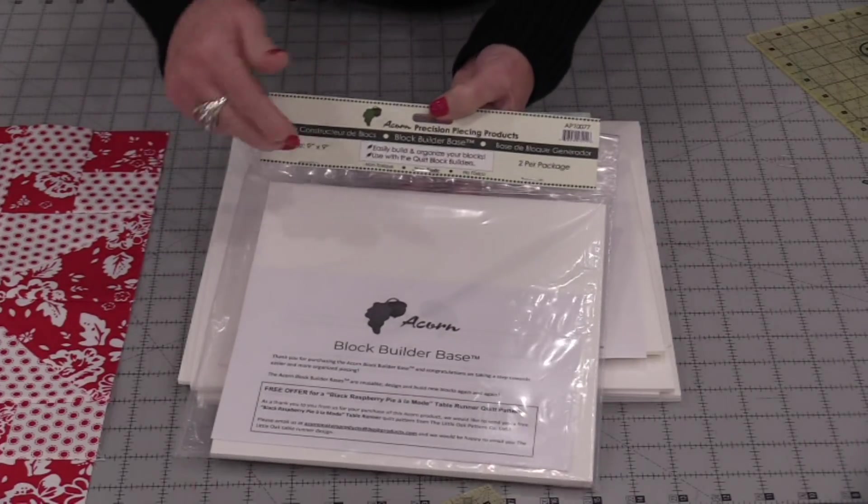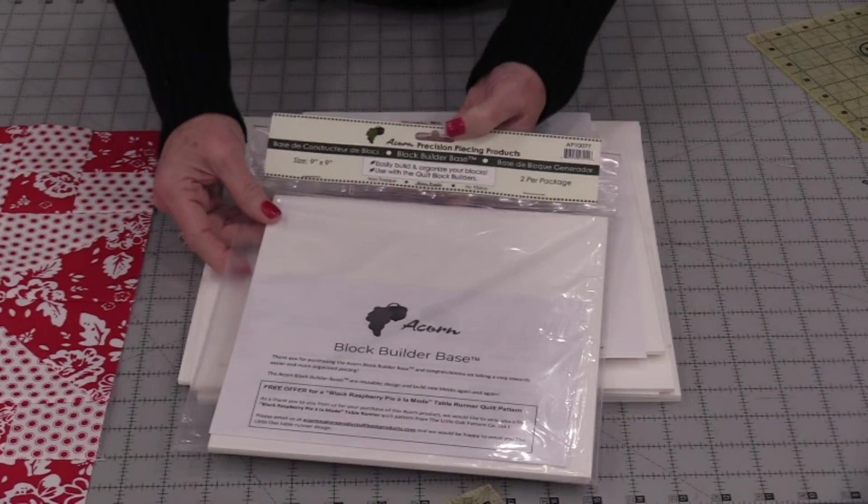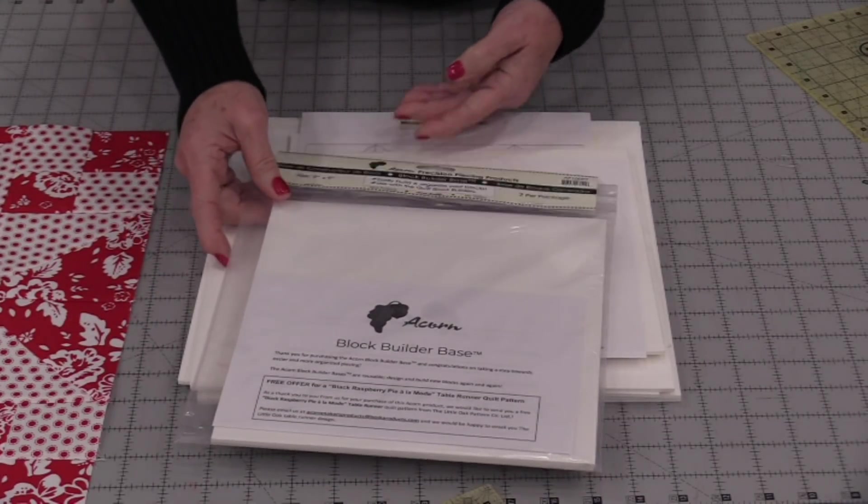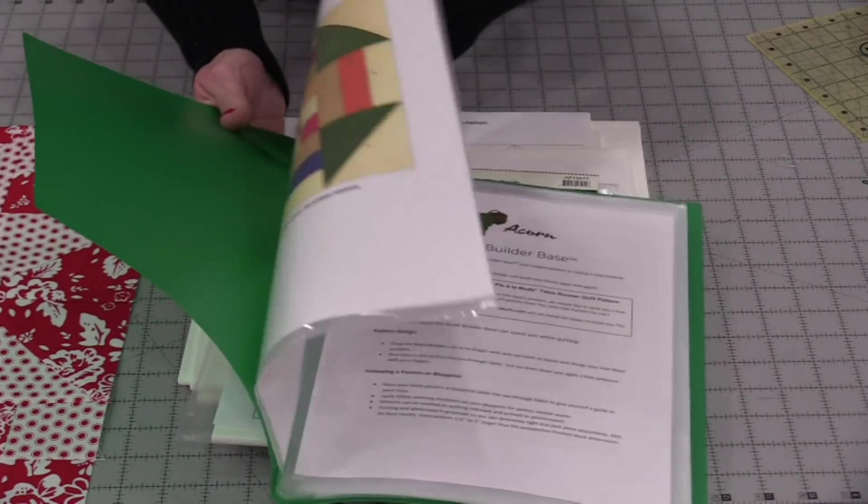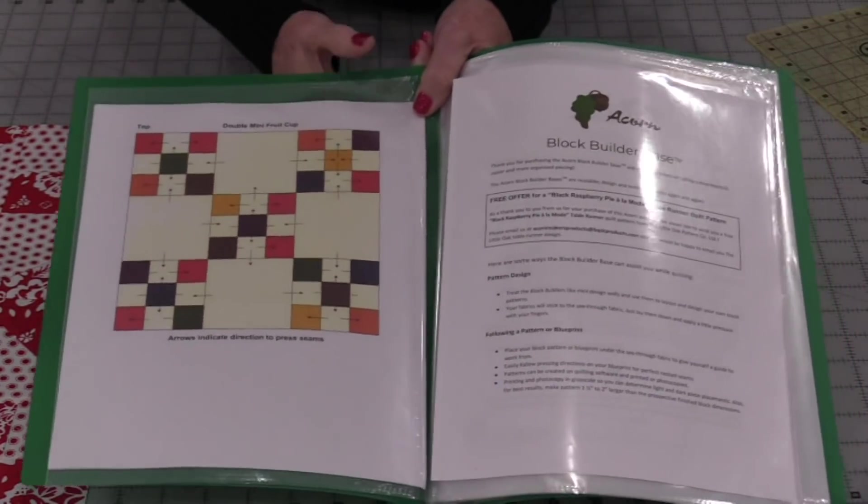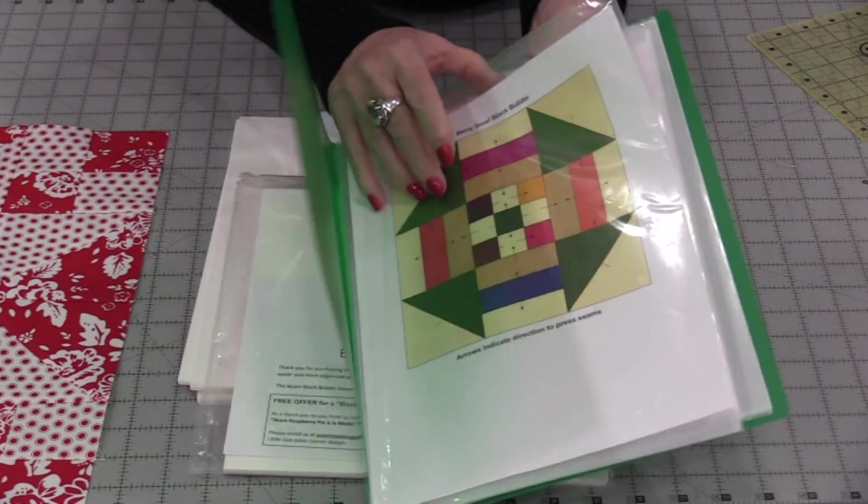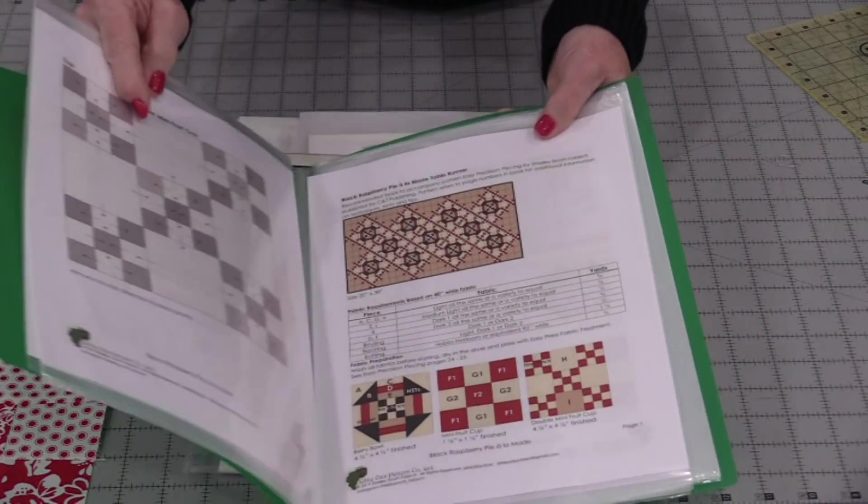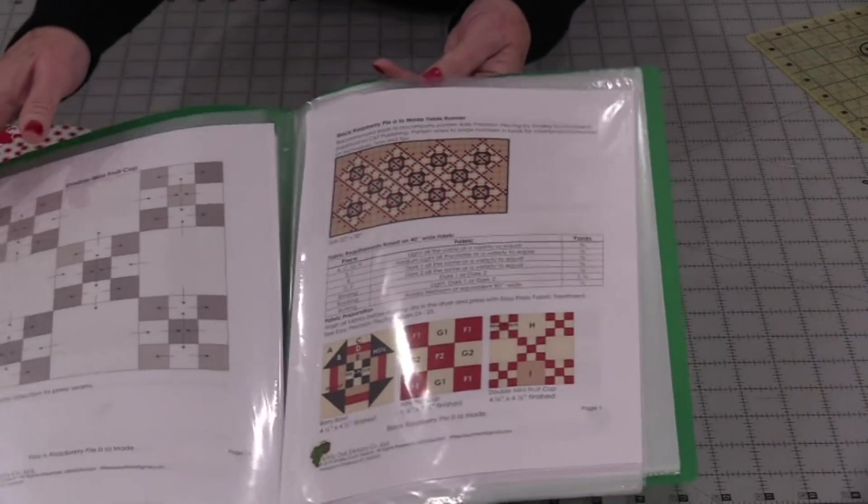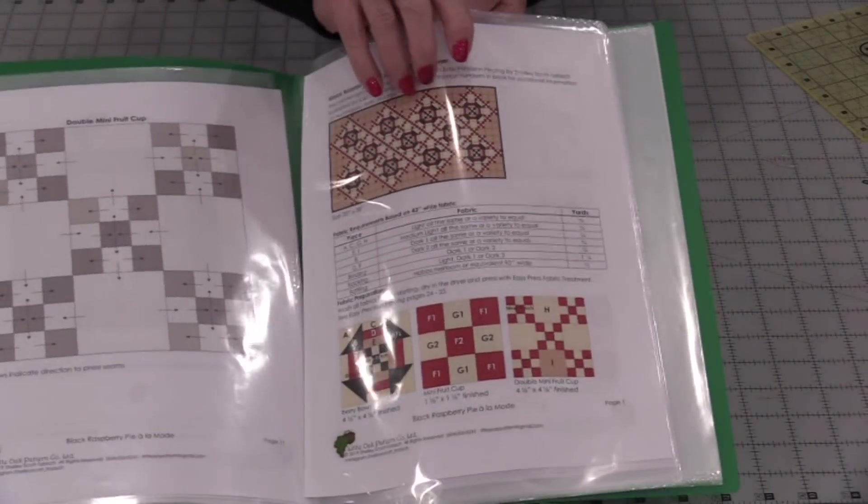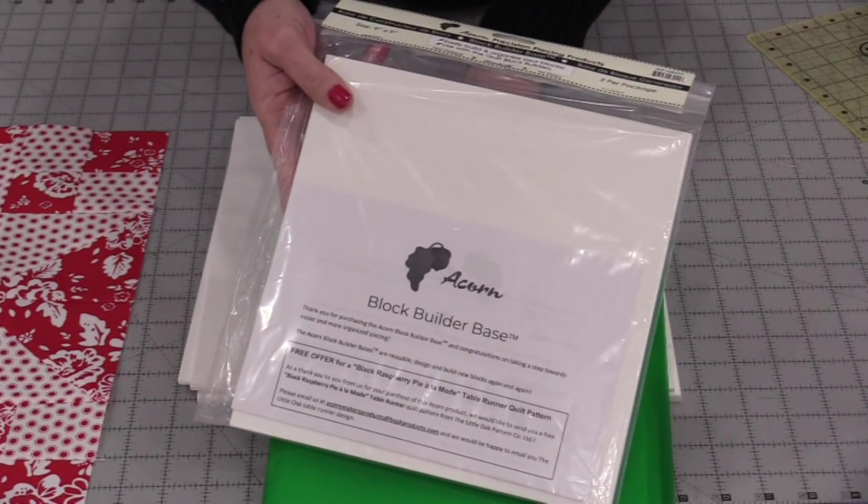If this is something you're wanting to try, there is a free pattern when you buy one of these sets. You can just go online and download that free pattern. It gives you the blocks that you need. They're color-coded and all of those pressing arrows are there already on that sheet for you, so you just put this underneath and follow. We have all the cutting directions. It makes a really nice table runner, but it does give you a step-by-step with that free pattern on how to really take advantage of these block builder bases.